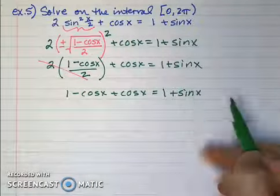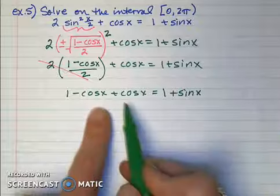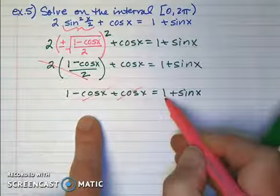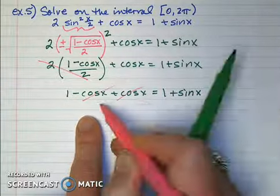Let's combine like terms. The cosines cancel, and if I subtract the 1 from the right, it's gone as well.